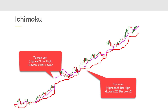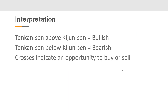The Kijun-sen is the same calculation except using 26 bars — find the highest value for the last 26 days, the lowest value, add those together and divide by two. Generally speaking, if the Tenkan-sen is above the Kijun-sen, it's going to be bullish. If the Tenkan-sen is below the Kijun-sen, it's going to be bearish. One of the classic buy signals for the Ichimoku method is a cross — the Tenkan-sen crossing above the Kijun-sen is a buy signal, and crossing below is a sell signal.